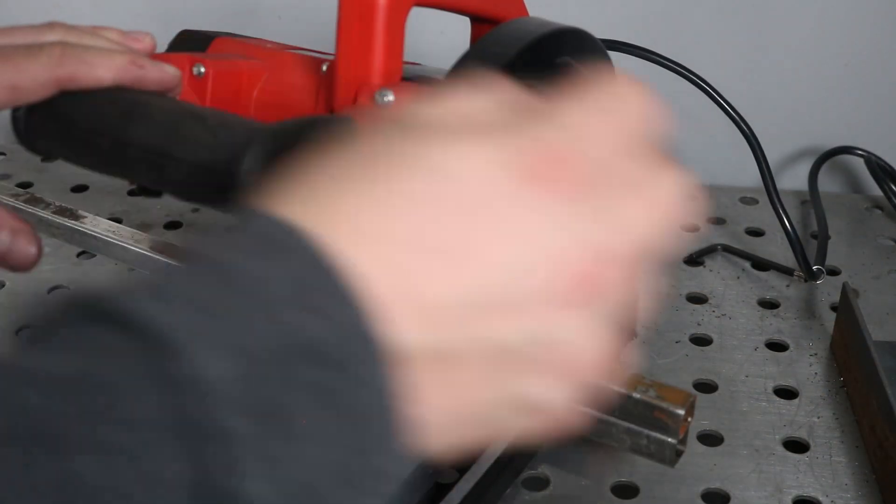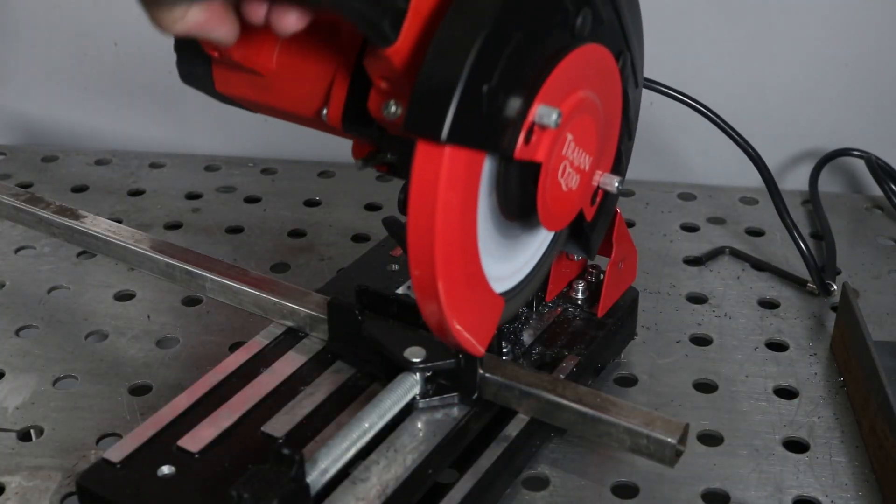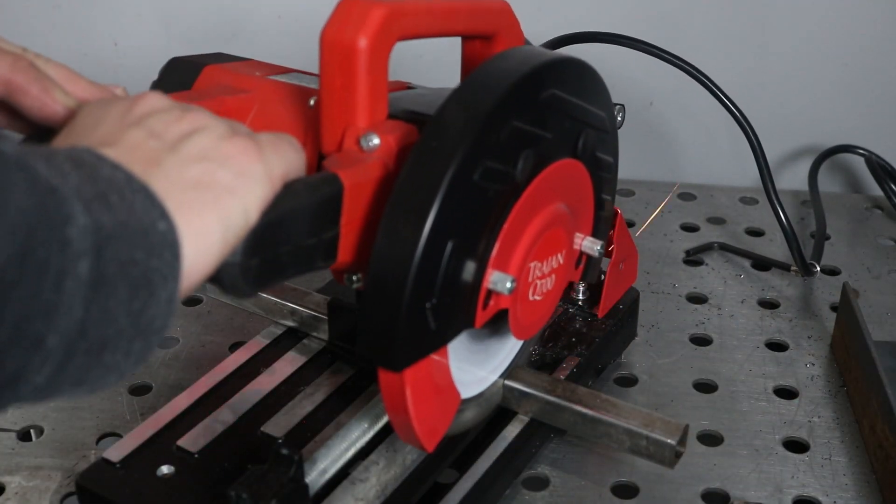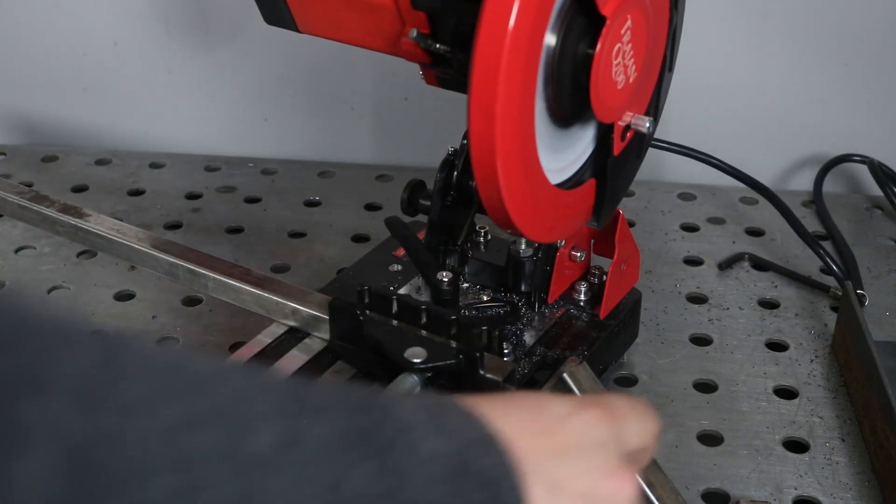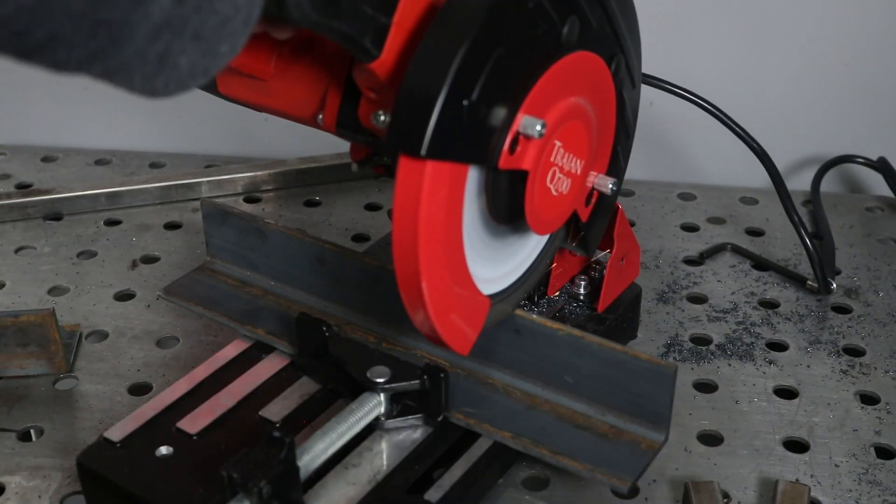Now it's a little cumbersome just sitting on the bench like that, though you could use it that way. I'm going to build a stand for it and I'm just using this three quarter inch square tubing and then I'm going to also use some two inch angle iron here.